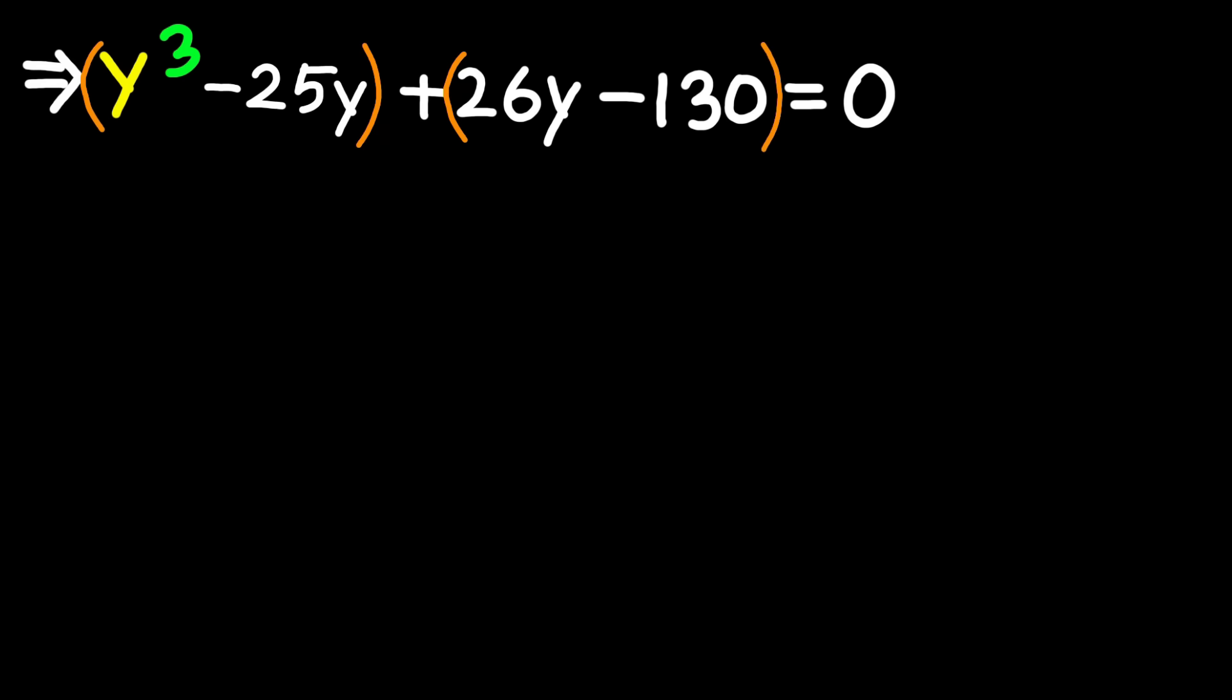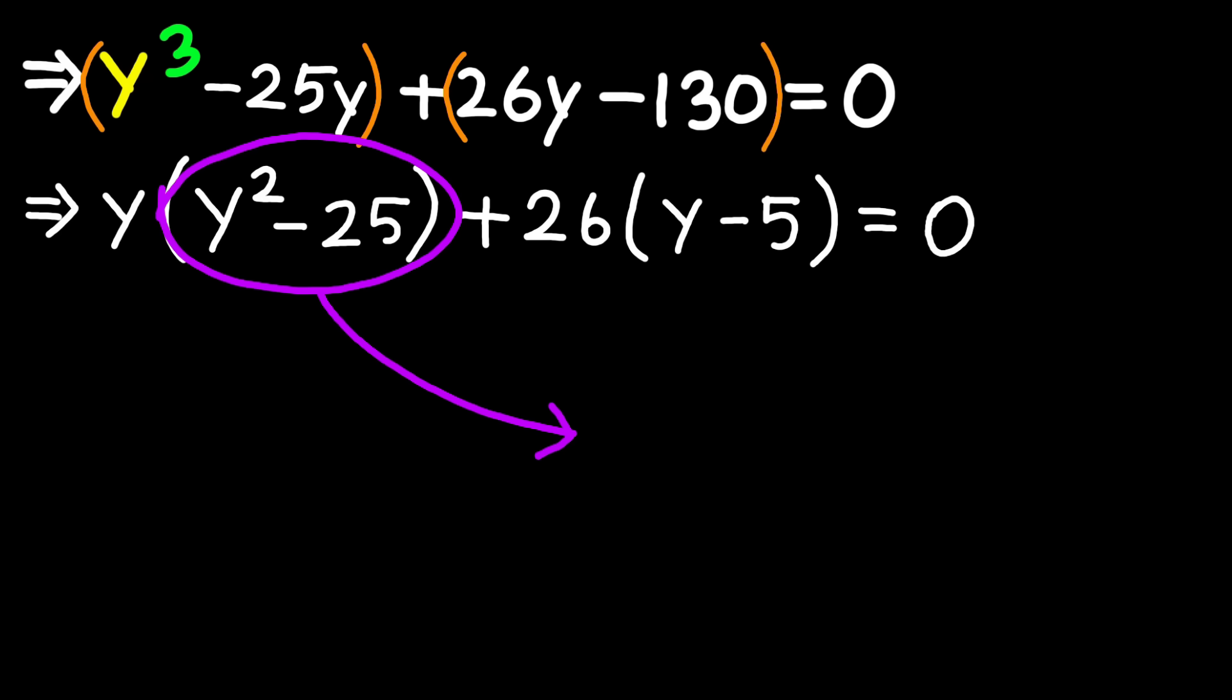From the first group, factor out y. That gives y times parentheses y squared minus 25 close parentheses. From the second group, factor out 26. That gives plus 26 times parentheses y minus 5 close parentheses equals 0. Now here's a nice spot. y squared minus 25 is a difference of squares, so it factors into parentheses y minus 5 close parentheses times parentheses y plus 5 close parentheses.